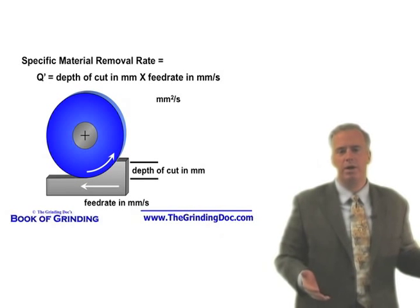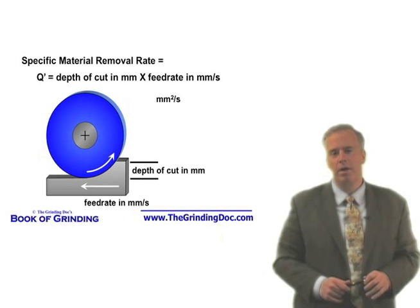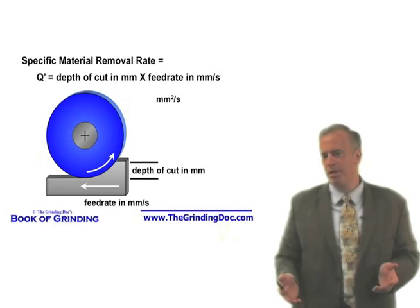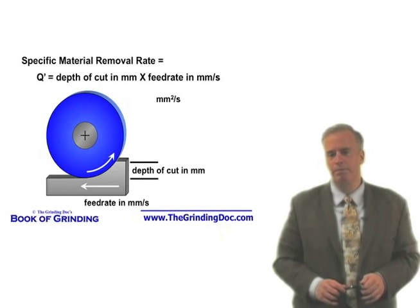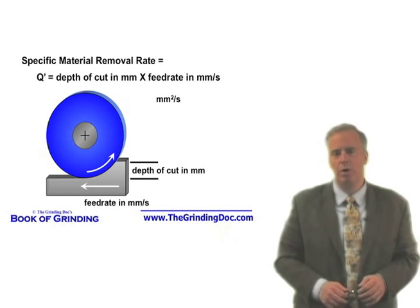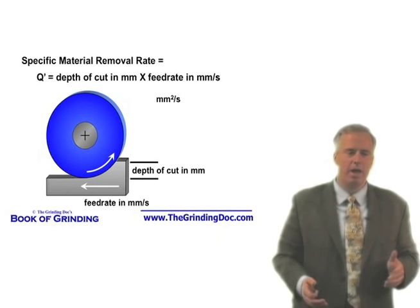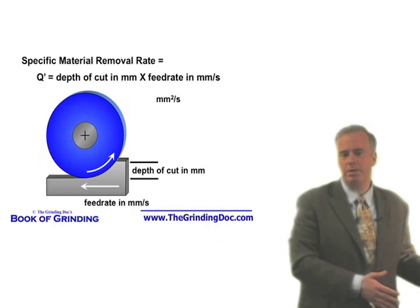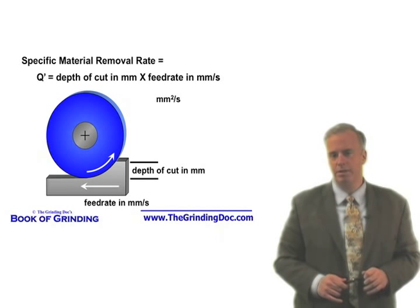For cylindrical grinding, I can do the same calculation. If I'm using aluminum oxide, a typical value might be two or three. If I've got a super abrasive CBN wheel on hardened steel, a typical value might be 12 or 13. It all depends on the type of grinding operation. Sometimes — like grinding ceramics — you get very low material removal rates because it's a more delicate operation.